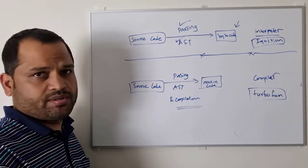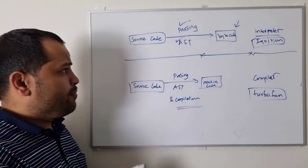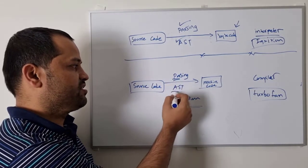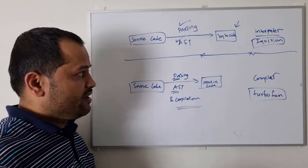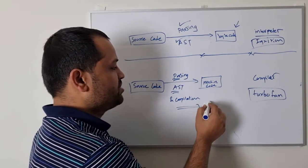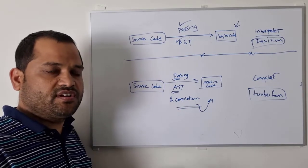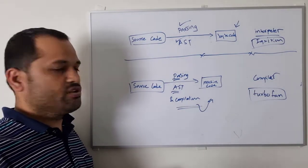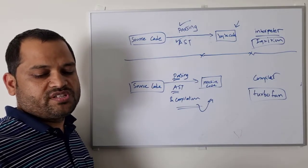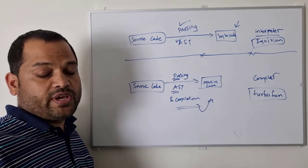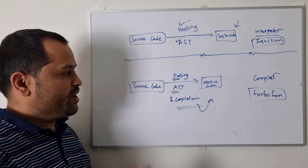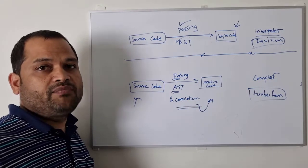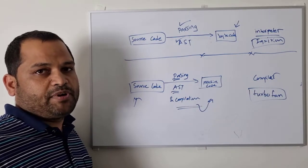Let us see what happens in the compilation process. In the compilation process also, it is the same thing — it takes the source code, parses it, creates the abstract syntax tree. The only difference is that here the compilation is happening. The source code will be converted into the compiled code, or we can also call it machine code. When the machine code is ready, next time we want to execute that particular code, we don't have to go to the source code — we can directly take that machine code that we have already compiled and execute it.